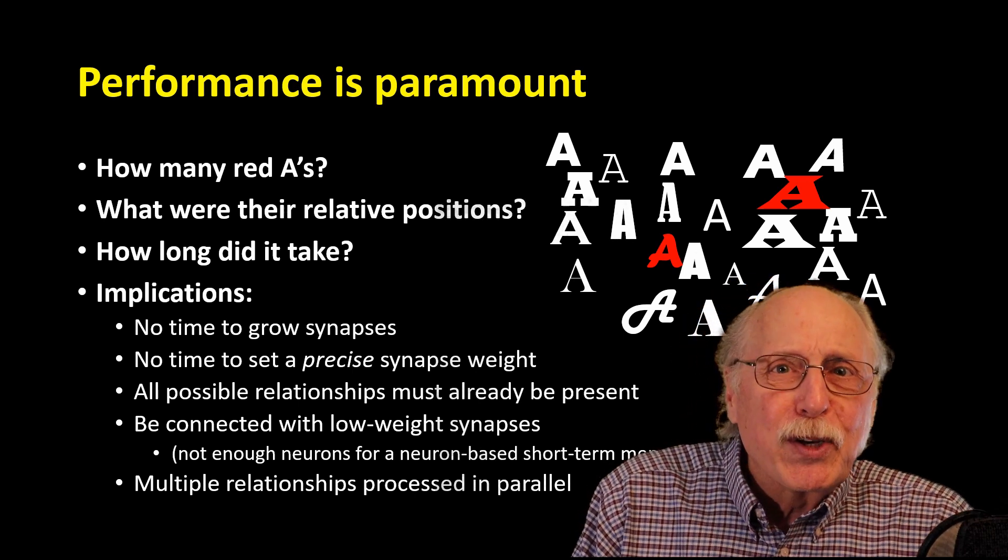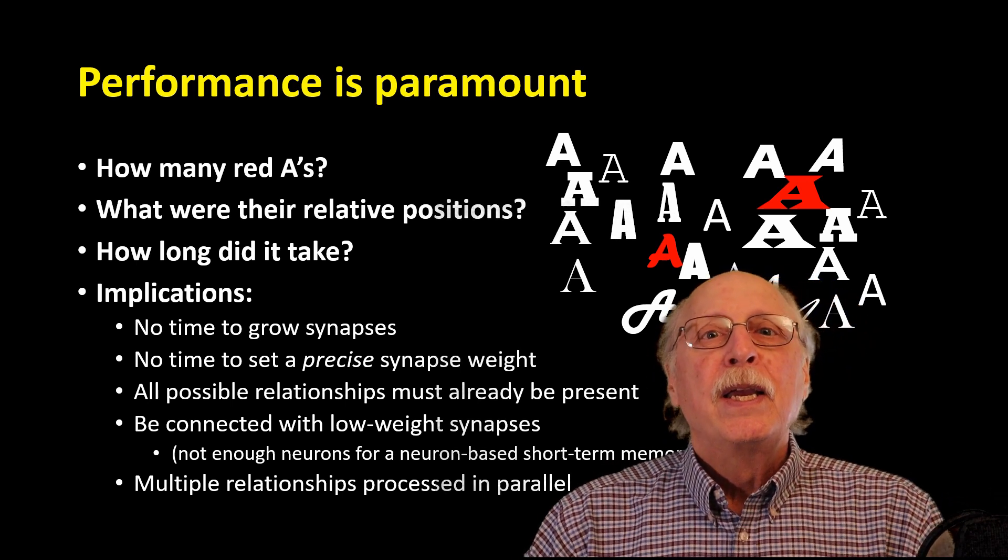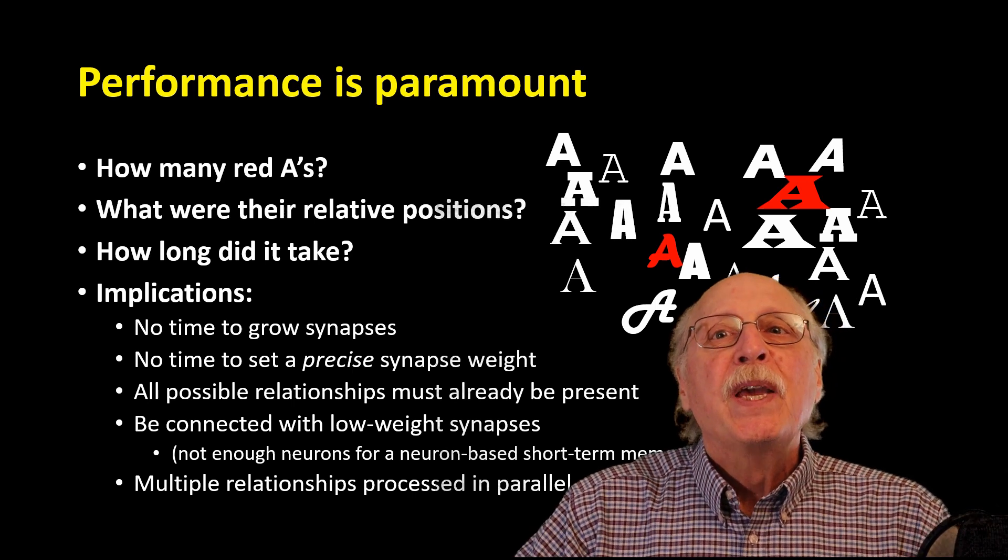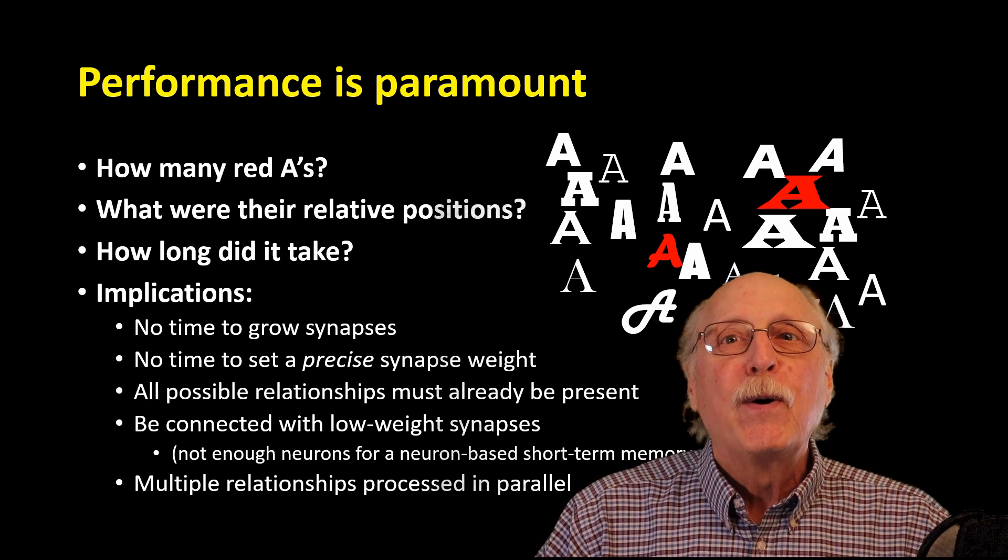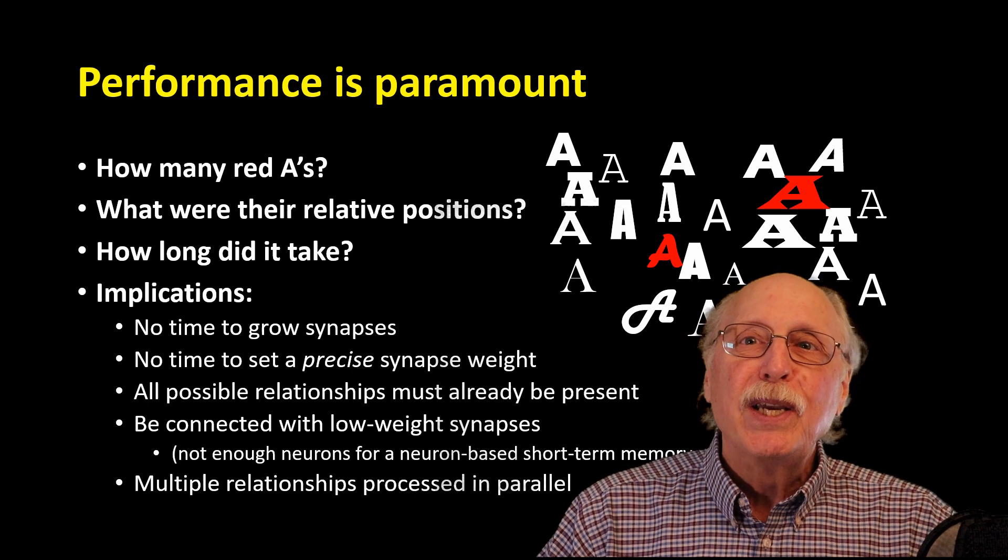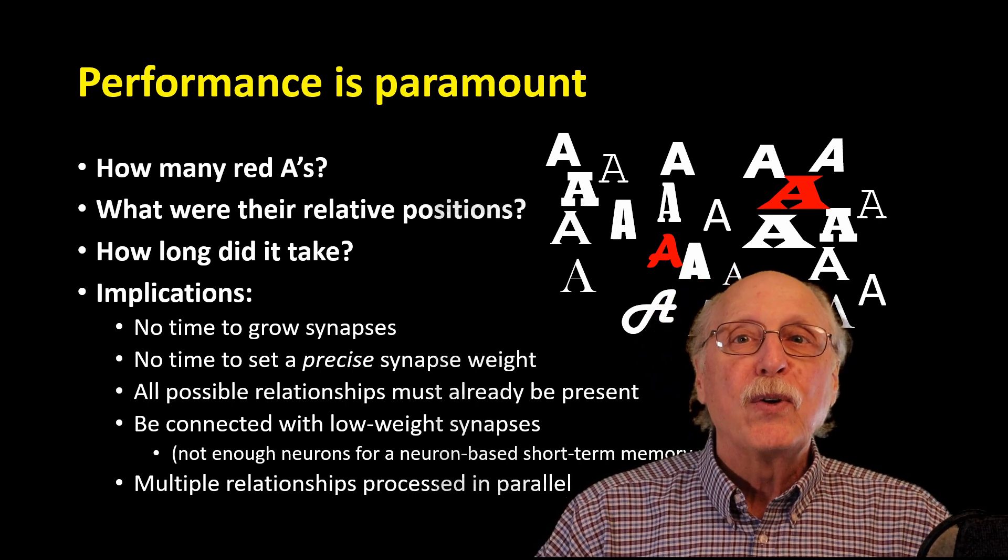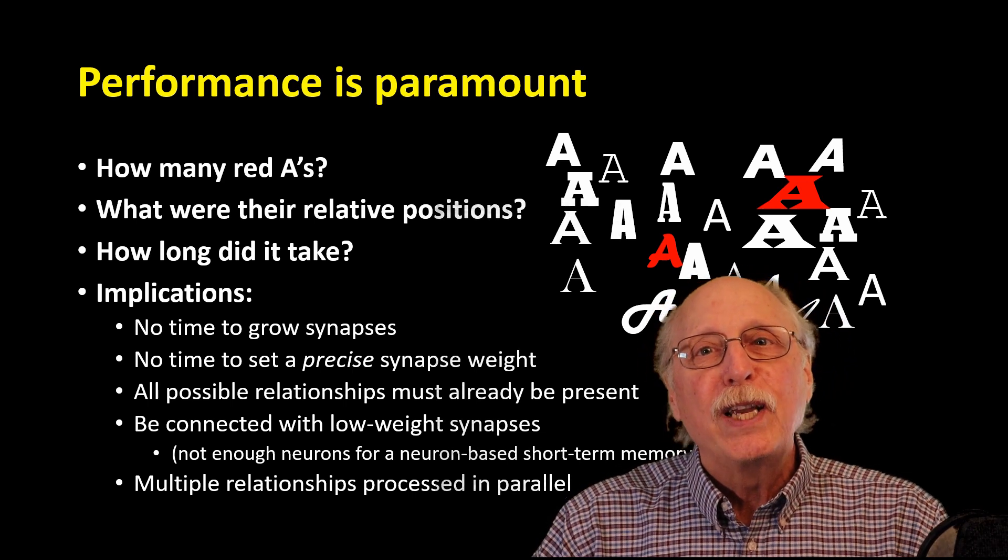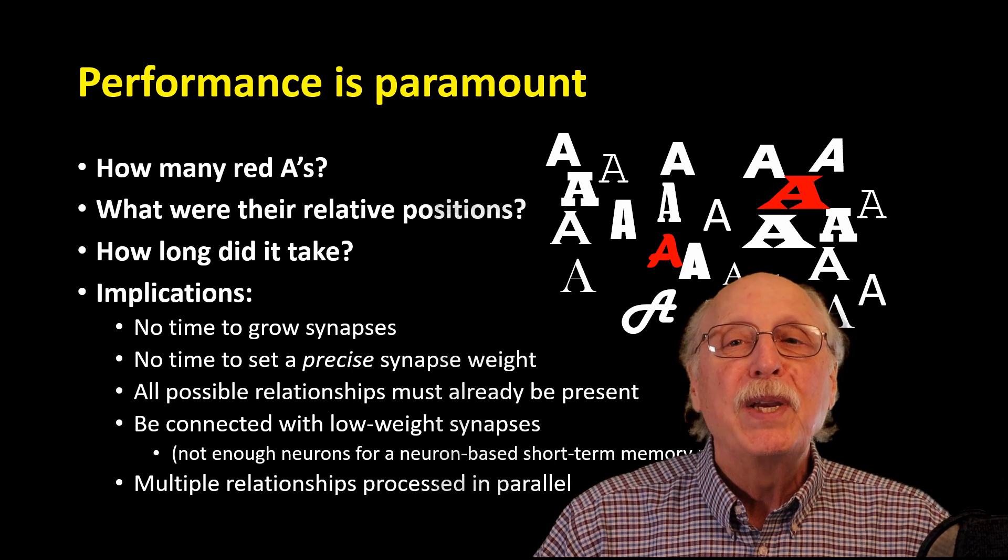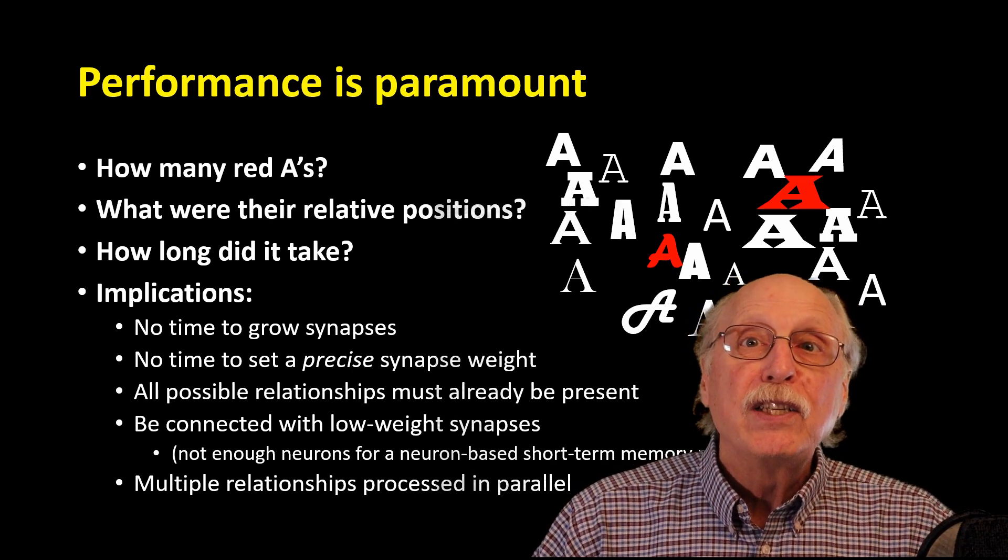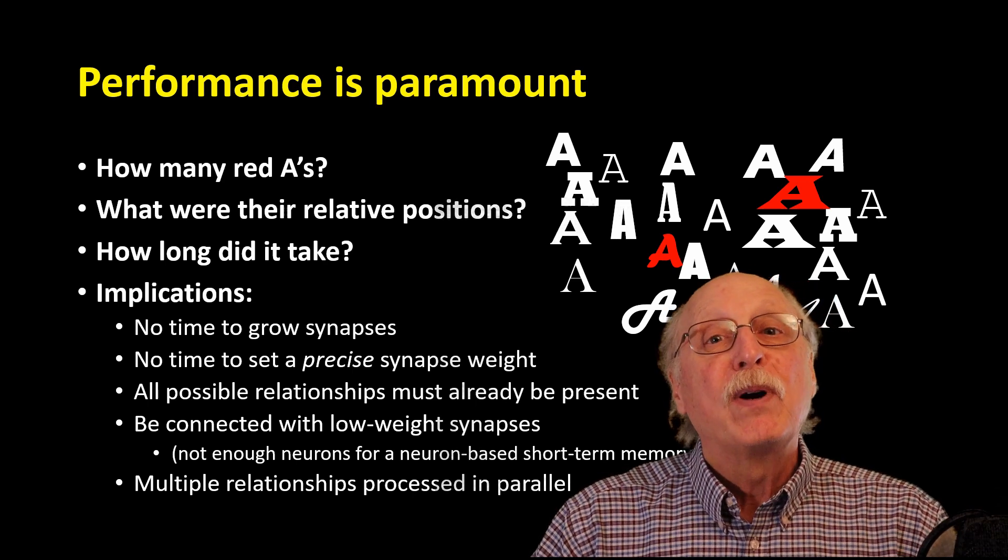First, there is no time to grow new synapses. This means that all the synapses must already be in place. Your brain just adjusts the weights of the synapses. There is also not enough time to set any precise synapse weights. Recall from a previous video, the more precise you want the synapse weight to be, the longer it will take both to set and to sense. This also implies that all possible relationships must already be present. They must be connected with low-level synapses just waiting to be strengthened to become meaningful. Finally, we can easily conclude all of the relationships you can sense from your visual inputs must be processed in parallel.